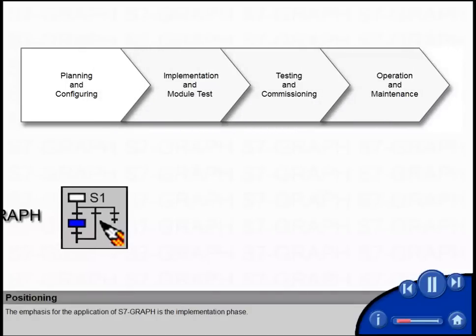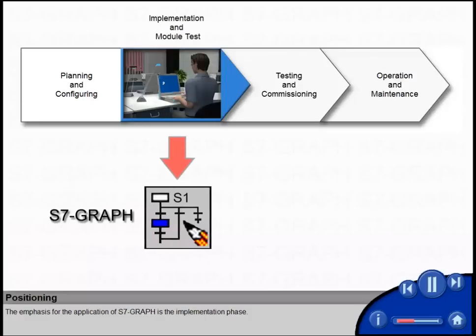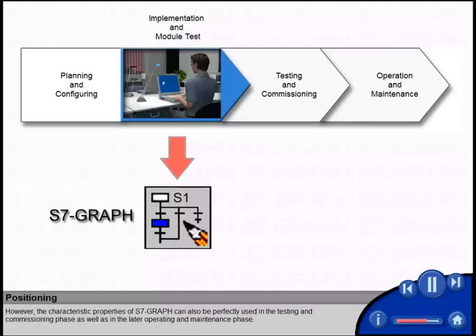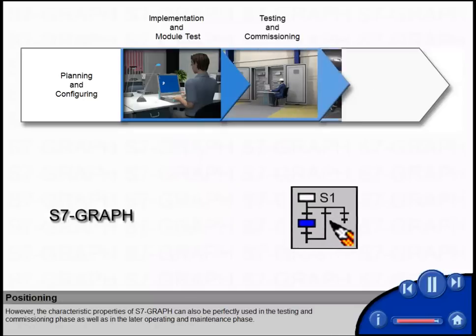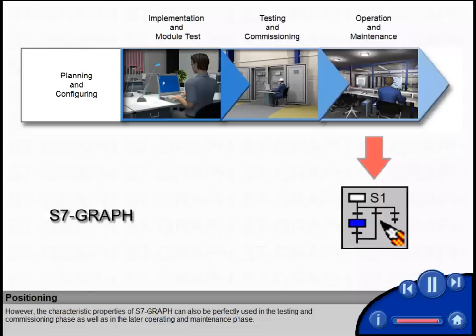The emphasis for the application of S7-GRAPH is the implementation phase. However, the characteristic properties of S7-GRAPH can also be perfectly used in the testing and commissioning phase, as well as in the later operating and maintenance phase.